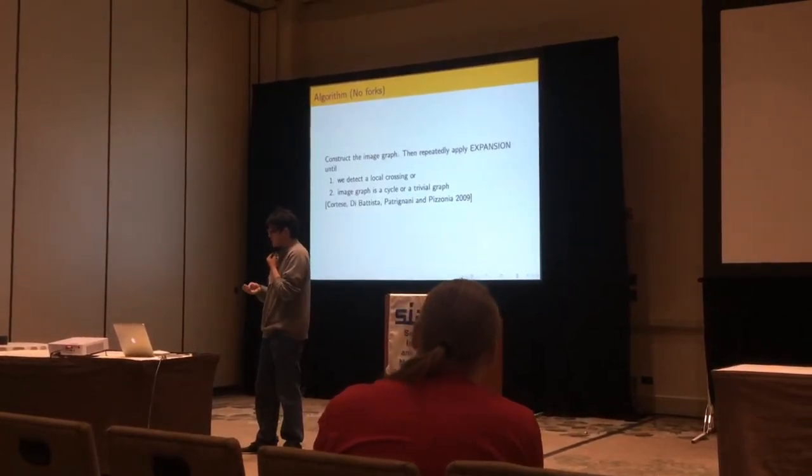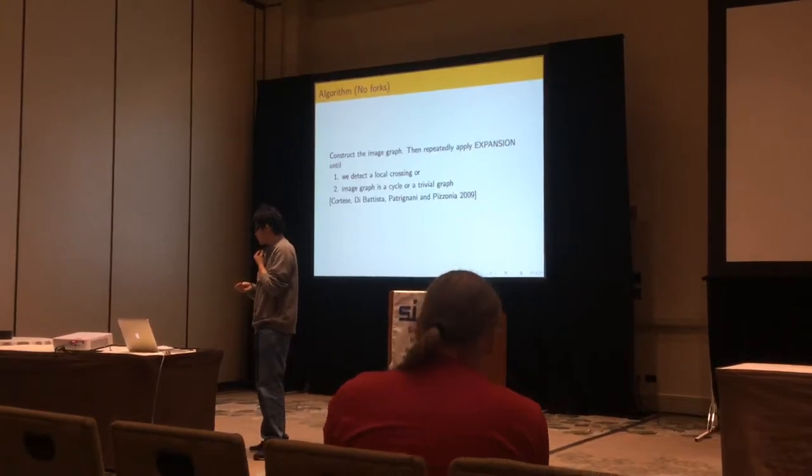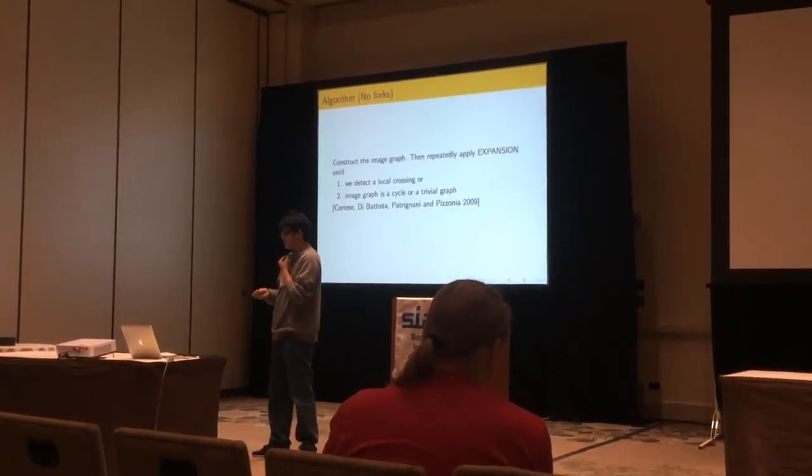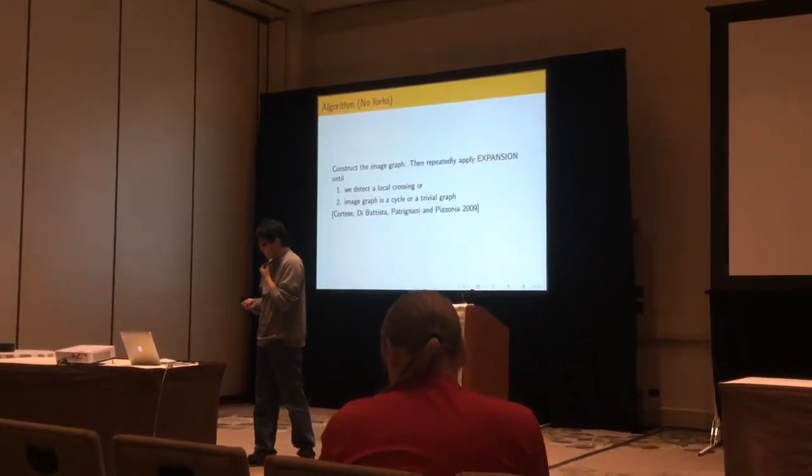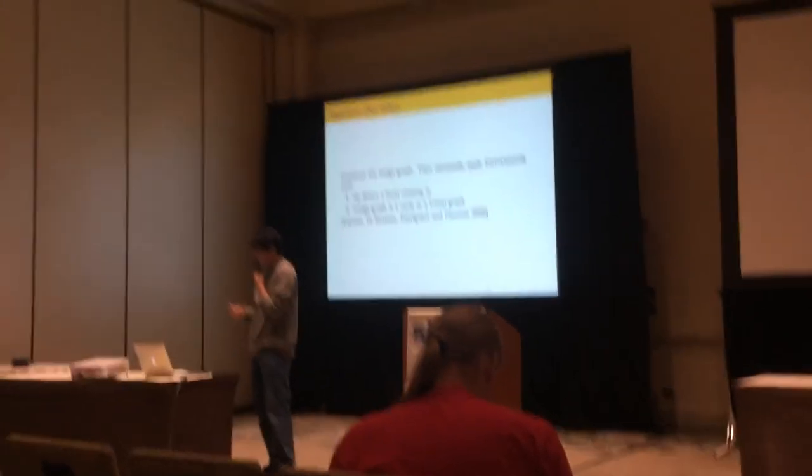Or the image graph gets reduced to a cycle or a trivial graph. So when the image graph is a cycle or a trivial graph, we know it's weakly simple polygons. So this algorithm is essentially the same as the quotas planarity algorithm.